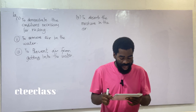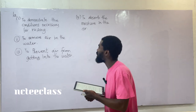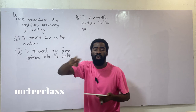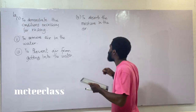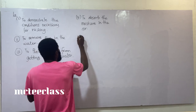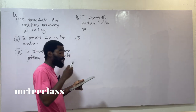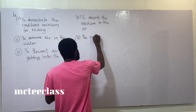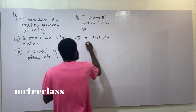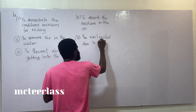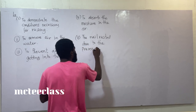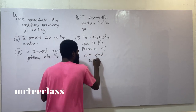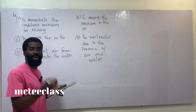Question 1a-v: Why did the nail in test tube A rust? Both conditions were fulfilled and present in test tube A. The nail rusted due to the presence of both air and water.